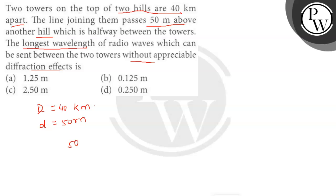It should be less than 50 m. Since the hill is located halfway between the towers, let's say this is the hill and these are the two towers separated by a distance of 40 km, and another hill is halfway between the towers.